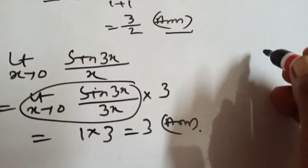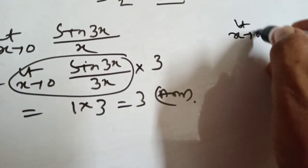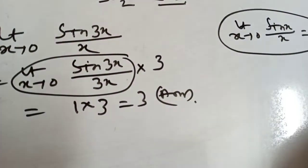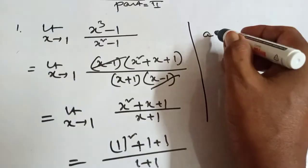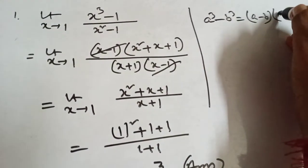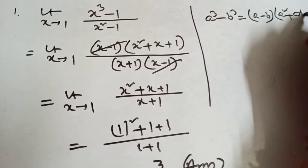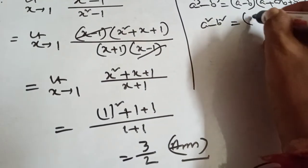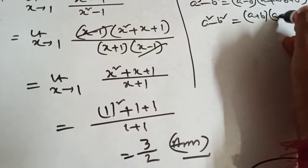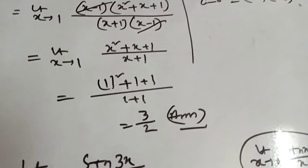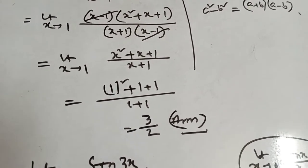You already know: when limit x tends to 0, sin x by x equals 1 — this is the formula you must know. Also remember: a cube minus b cube equals a minus b into a square plus ab plus b square — this is the factor form. And a square minus b square equals a plus b into a minus b. You must remember these formulas.